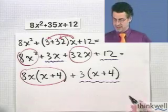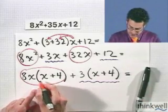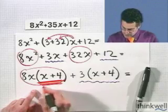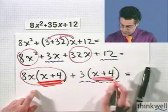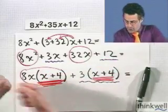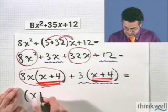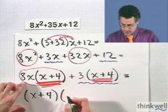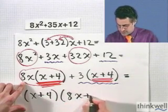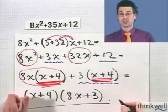Now this is factor by grouping, if you notice, because check it out. This piece right here, I've got a factor of x + 4 and a factor of x + 4. I can factor both of those common factors out of the whole thing. And if I do that, I see x + 4 times the quantity 8x + 3. And I've just factored this original trinomial.